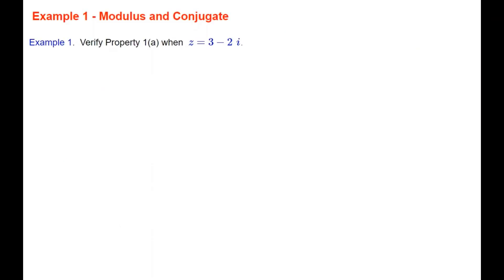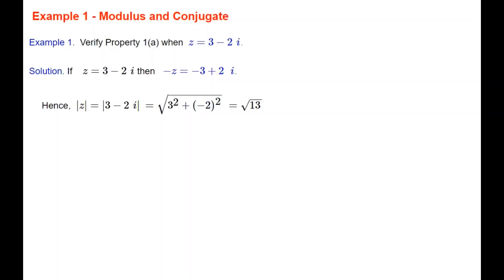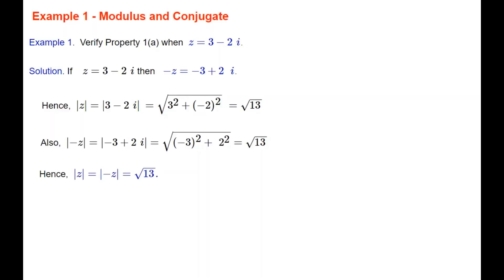In example 1, we verify property 1a when z equals 3 minus 2i. If z takes this value, then minus z is minus 3 plus 2i. The modulus of z is the square root of 3 squared plus minus 2 squared, which is the square root of 9 plus 4, the square root of 13. The modulus of minus z is the square root of minus 3 squared plus 2 squared, which also equals the square root of 13. Hence the modulus of z equals the modulus of minus z.